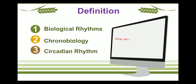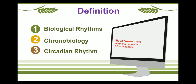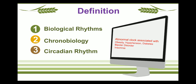Circadian Rhythms: The term circadian comes from the Latin word 'circa' meaning 'around' and 'diem' meaning 'day.' The circadian rhythm is also known as the biological clock. It is necessary to regulate the sleep-wake cycle, hormonal secretion, regulation of blood pressure, and regulation of metabolism. Any abnormalities related to circadian rhythm can cause various disorders like obesity, hypertension, diabetes, bipolar disorder, and insomnia.